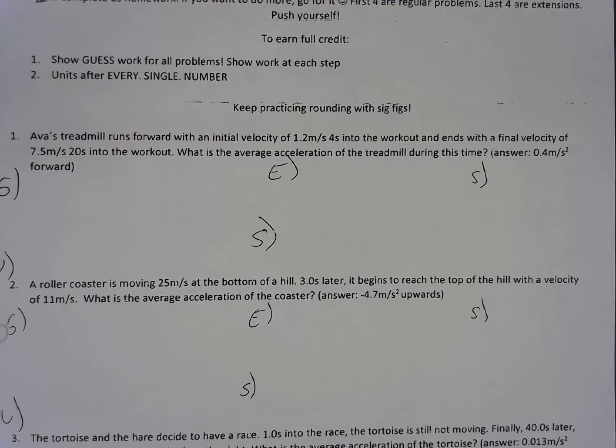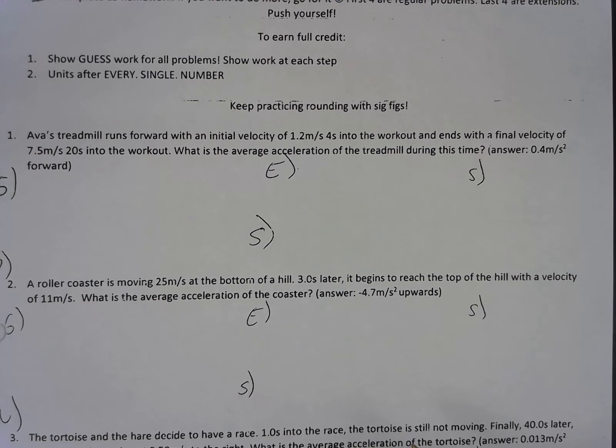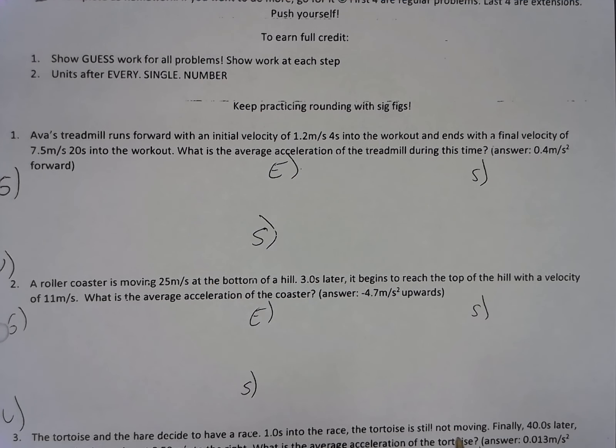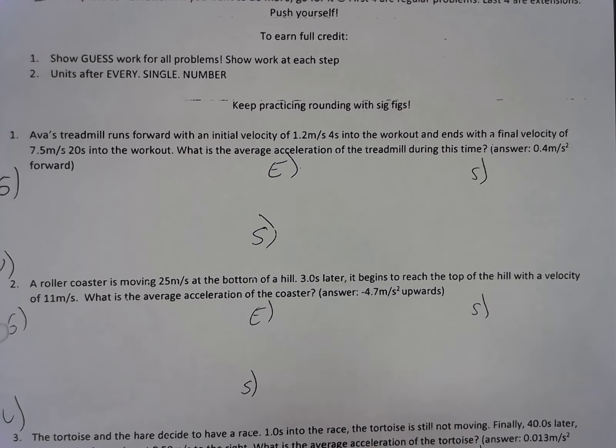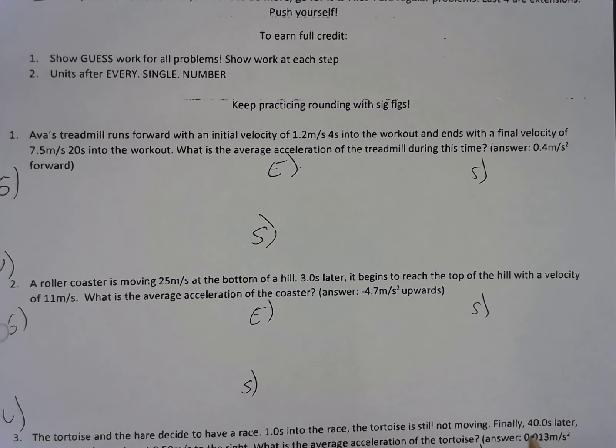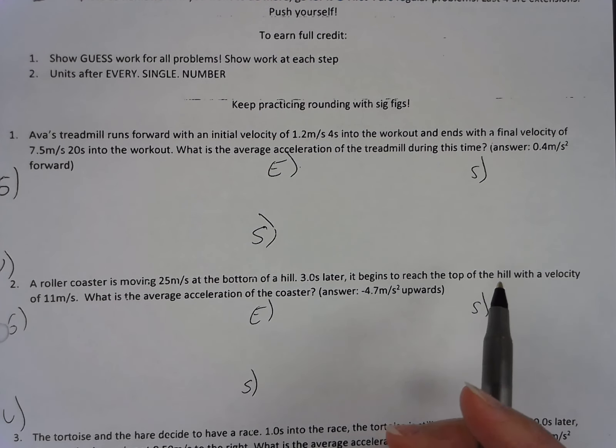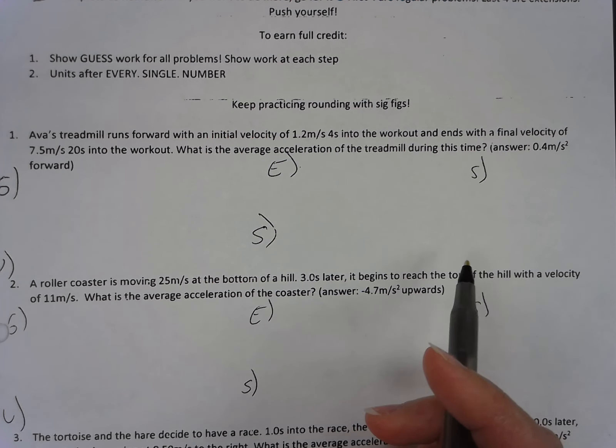Okay, so Ava's treadmill runs forward with an initial velocity of 1.2 meters per second, 4 seconds into the workout, and ends with a final velocity of 7.5 meters per second, 20 seconds into the workout. What's the average acceleration of the treadmill during this time frame? So I have a time frame here, and I want to figure out the average within my time frame.